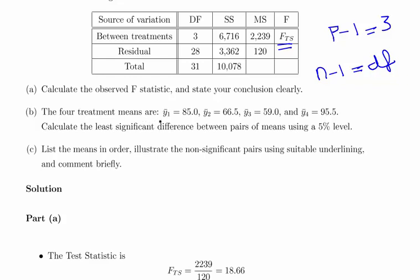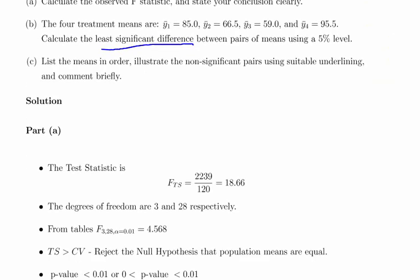The treatment means are for group 1, 85; for group 2, 66.5; for group 3, 59; and group 4, the mean is 95.5. Calculate the least significant difference between pairs of means using a 5% interval. Now just as a quick remark, what is going to happen here is that they all have the same sample size - there's 8 for each of the 4 groups. That's important. It means that we only have to do this calculation once. And then just listing the means in order, illustrate the non-significant pairs using suitable underlining and comment briefly.